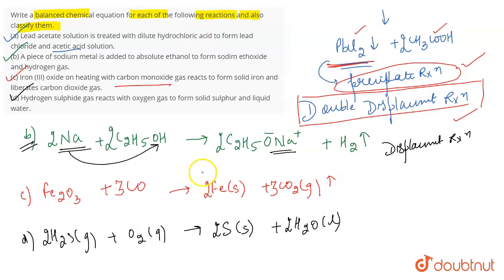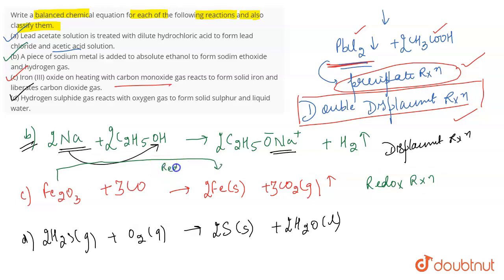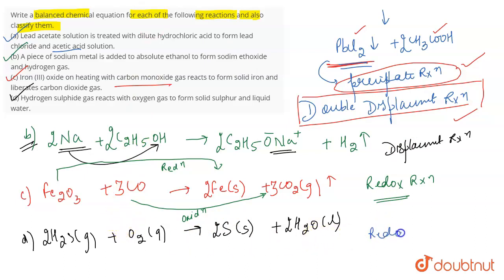Talking about the Fe₂O₃ reaction: this is a redox reaction. Why? Because Fe₂O₃ is getting reduced to Fe due to loss of oxygen, whereas carbon monoxide is getting oxidized to carbon dioxide due to addition of oxygen. That is why this is a redox reaction. Similarly, the last reaction (H₂S + O₂) is also a type of redox reaction.